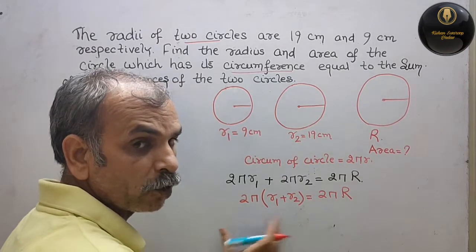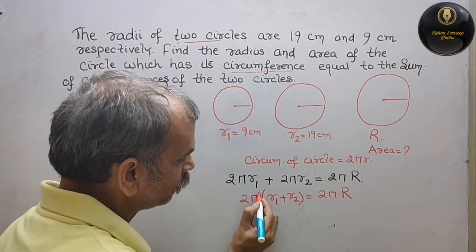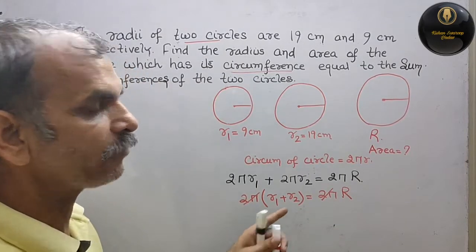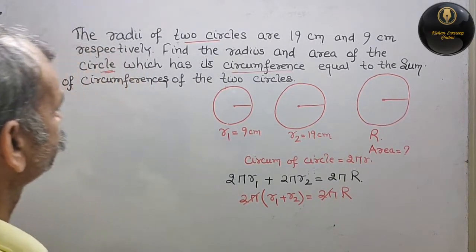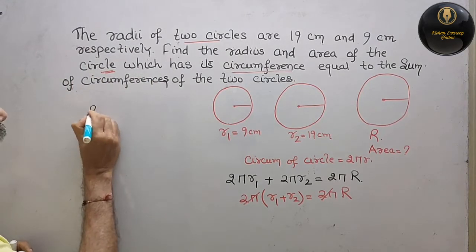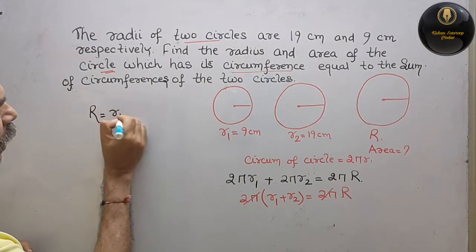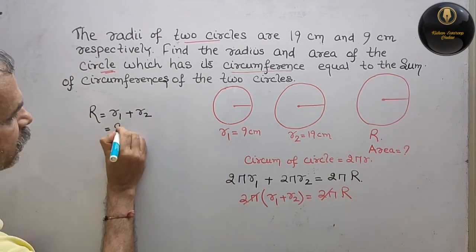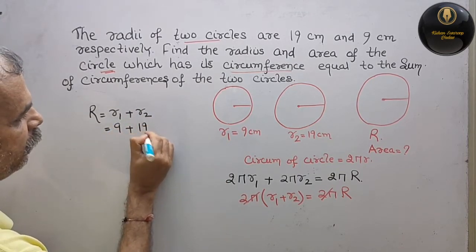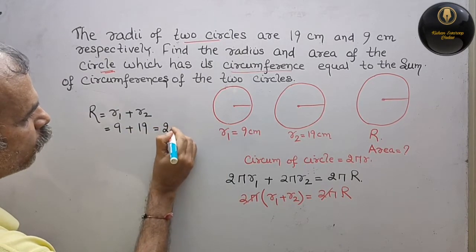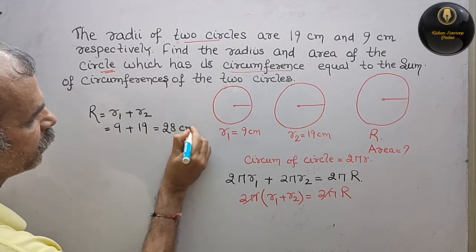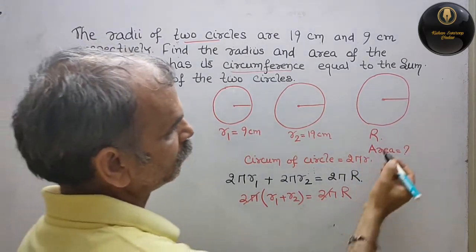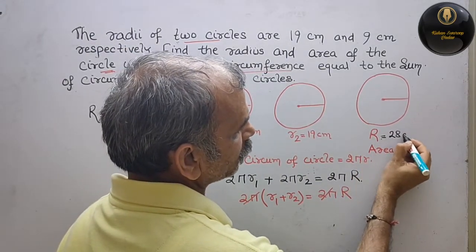Toh dekho, 2π dono side mein hai, it will cancel out. Toh aapka R kya bacha: R is equal to r1 plus r2, that is equal to 9 plus 19. Toh kitna ho gaya — 28 cm. Toh iska radius is 28 cm.